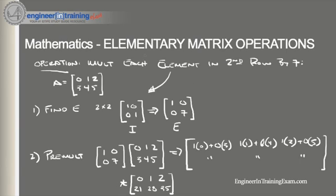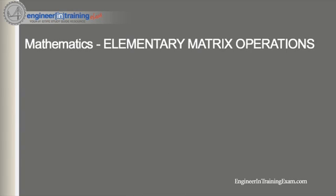You can quickly confirm that the operation of multiplying each element in the second row by 7 has been completed by comparing the original matrix and the new matrix. Now let's look at one more example — an elementary row operation multiplying one row and adding the result of that row to another row.